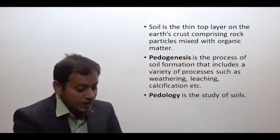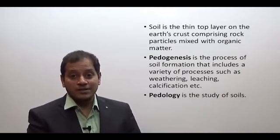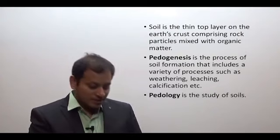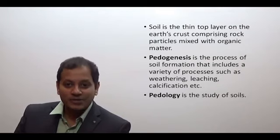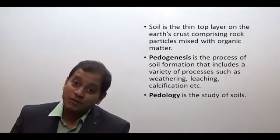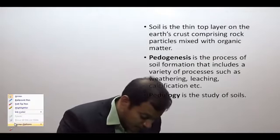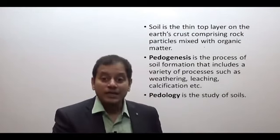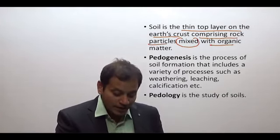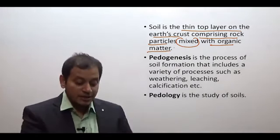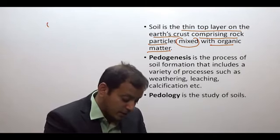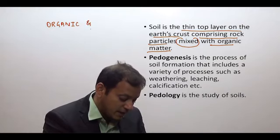Soil is the thin top layer of the earth's crust comprising rock particles (inorganic) with organic matter. The soil may have decayed plants, decayed animals, remains of dead animals decomposed by bacteria, and fallen leaves further decomposed by bacteria. So soil consists of both organic matter — matter derived from living beings — and inorganic matter such as rock particles.